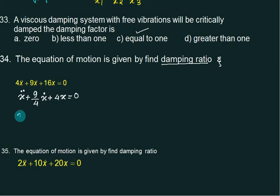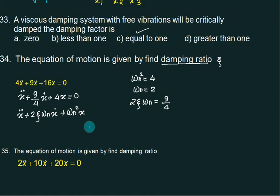Standard equation is X double dot plus 2 zeta omega n X dot plus omega n square X. Omega n square is 4, so omega n equals to 2. 2 zeta omega n is 9 by 4. How can I see? 2 zeta into 2 equals 9 by 4, so zeta equals 9 by 16.